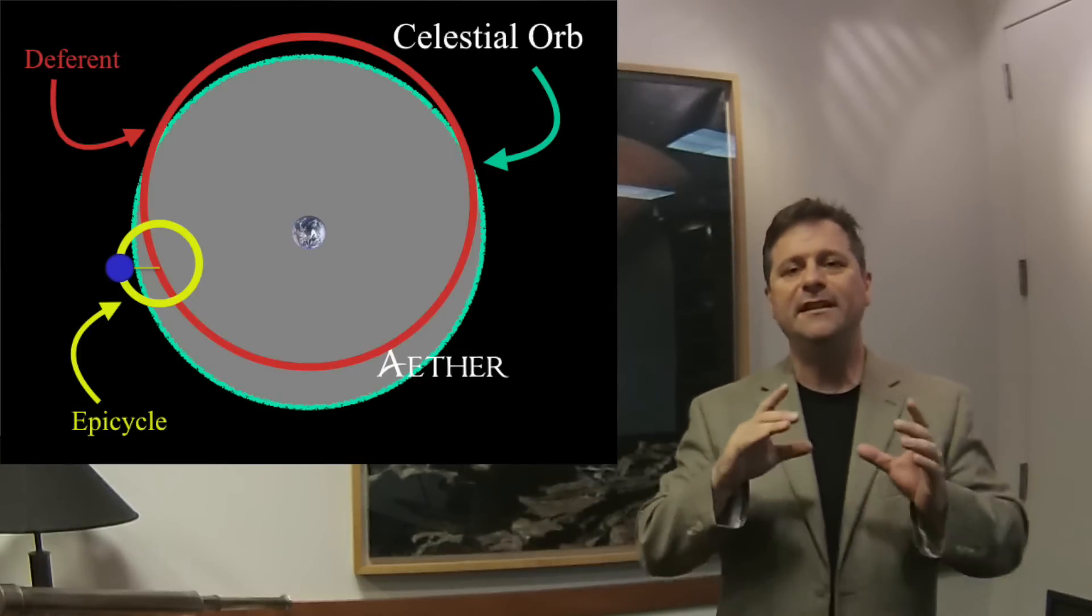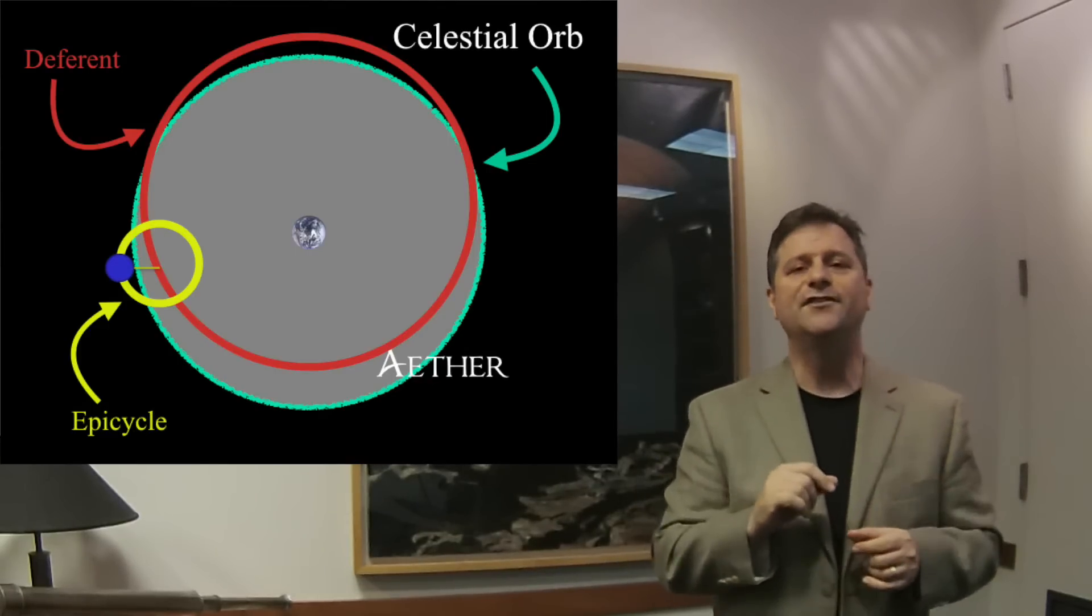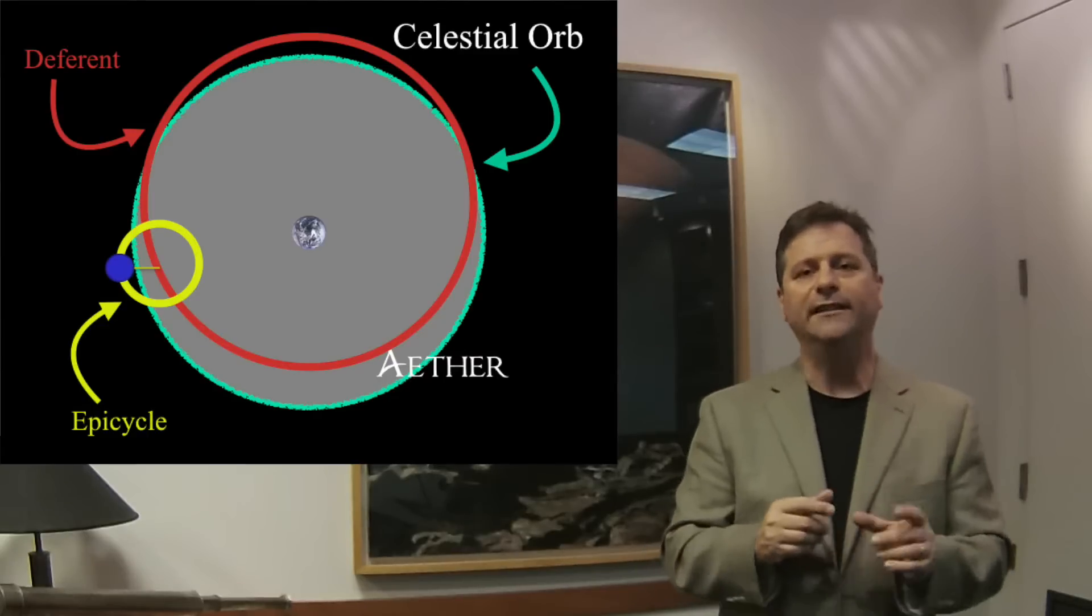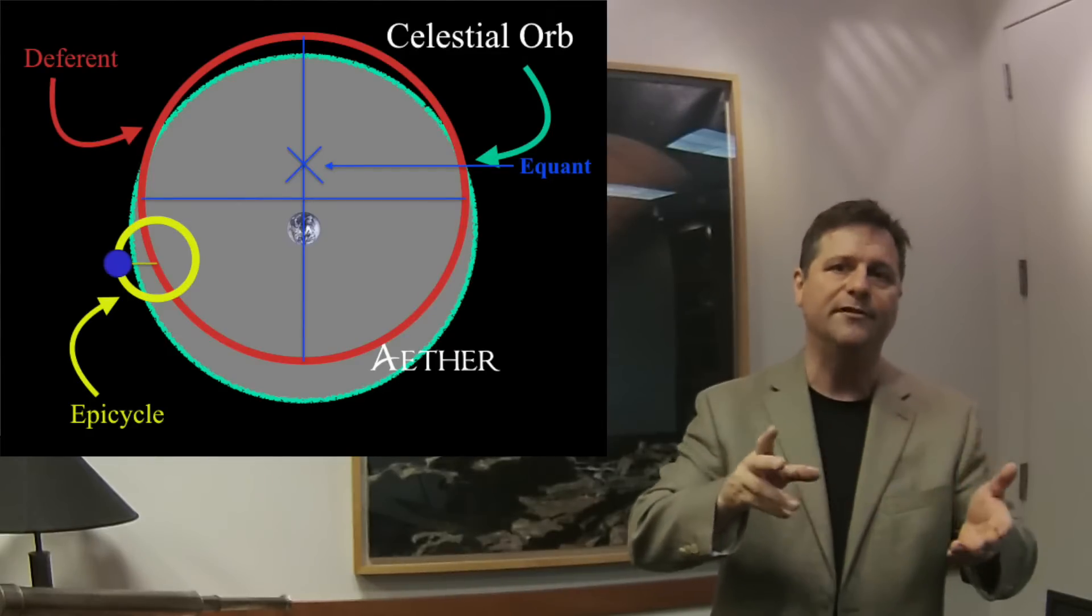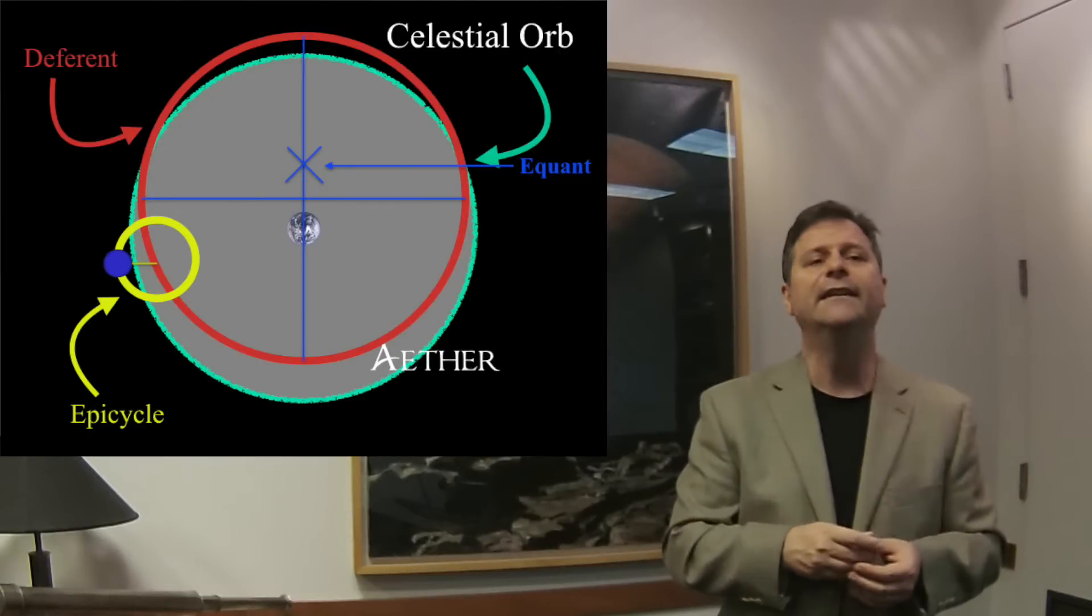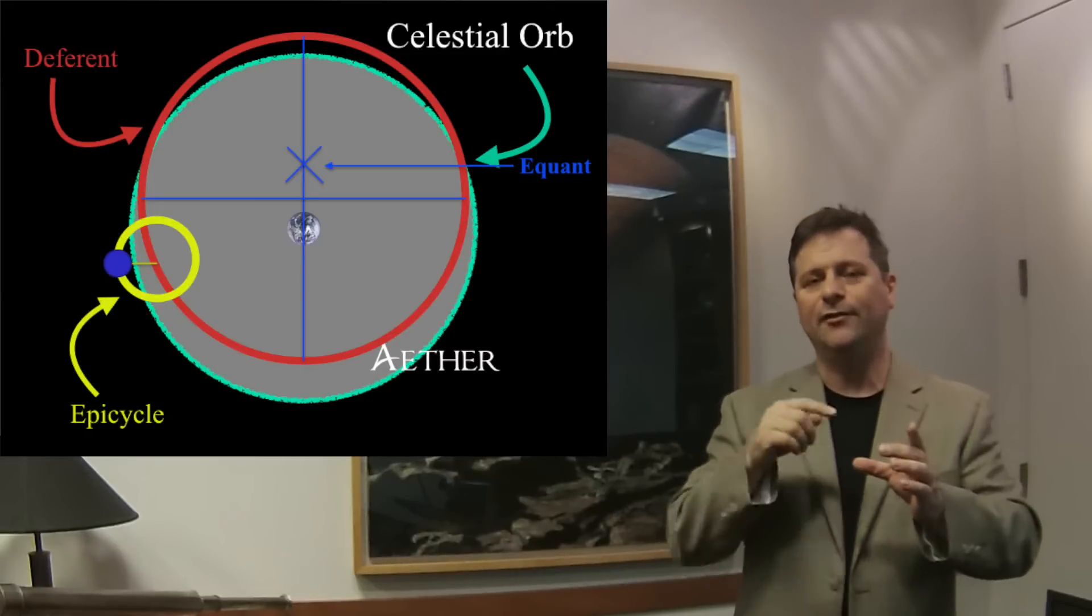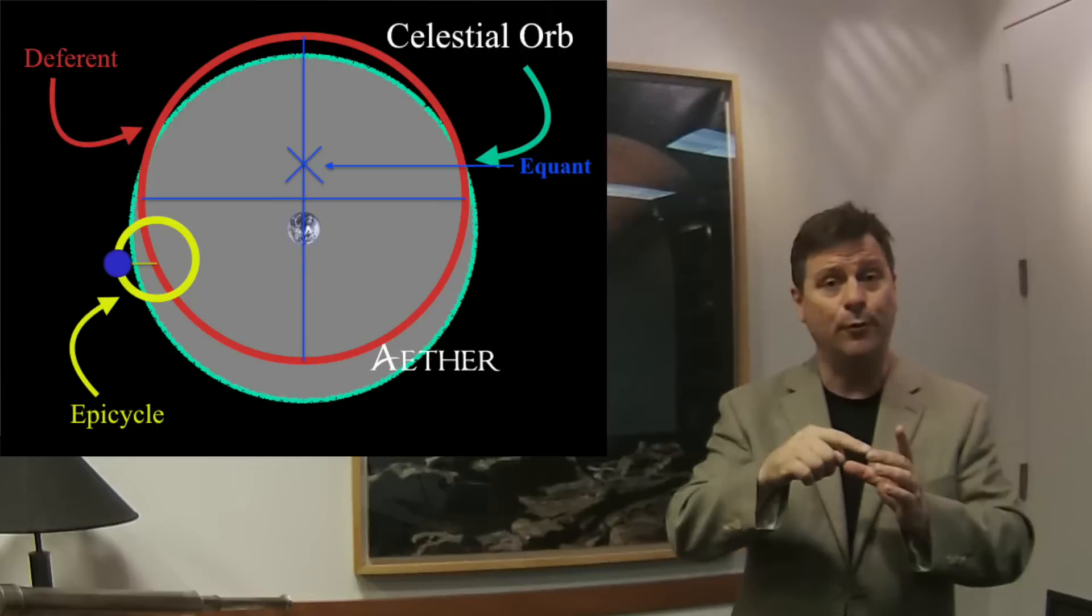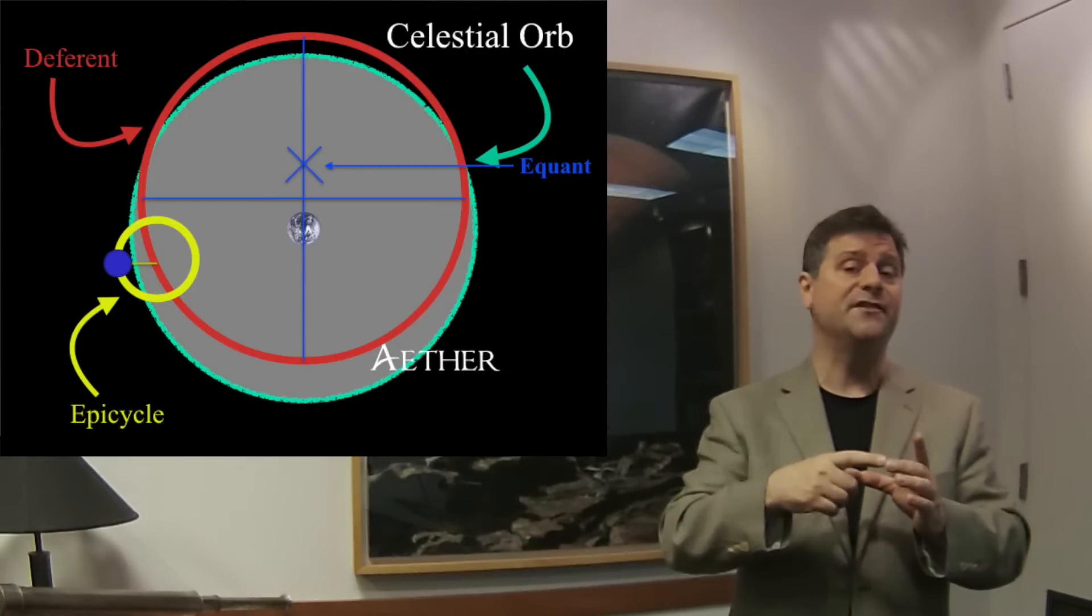So you've got this epicycle that's on the deferent. So as the planet goes around the earth, it does these little loop-de-loops all the way around. So we've got these little loop-de-loops. In addition to that, the earth is not exactly at the center, but offset. And so the offset is offset by a little bit of distance, and each of the planets has a different offset from center of the earth. So the earth isn't truly at the center, according to Ptolemy.